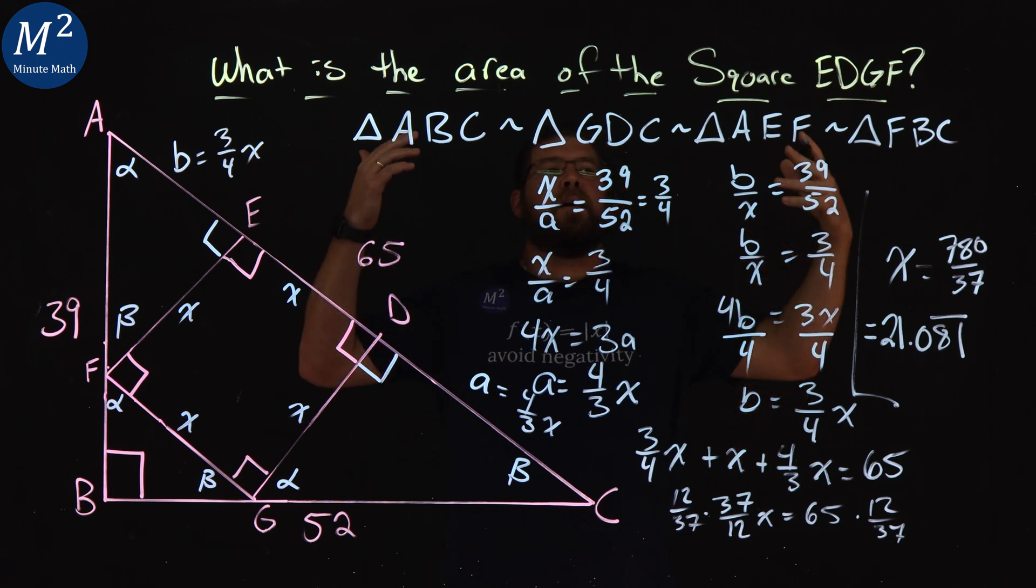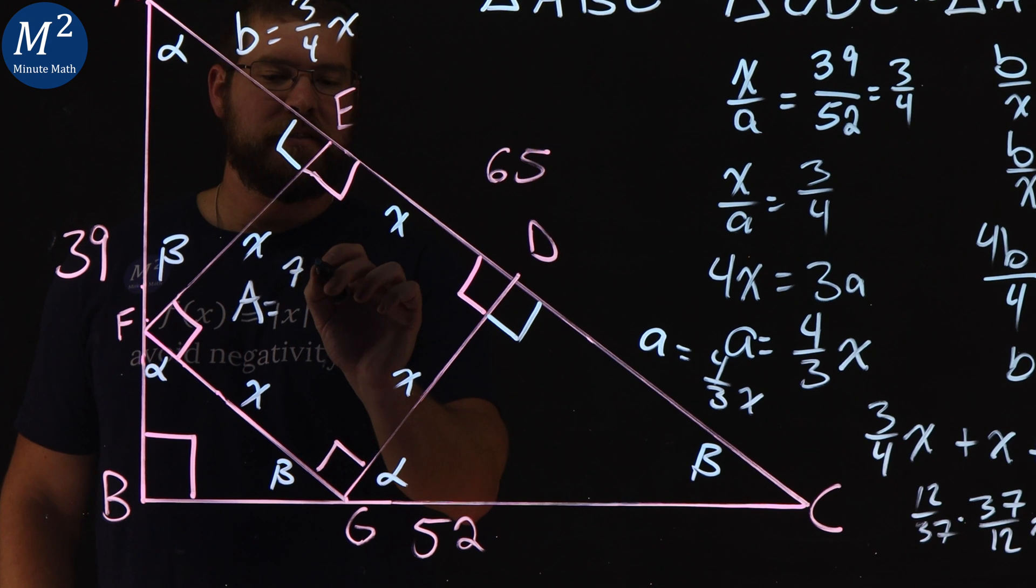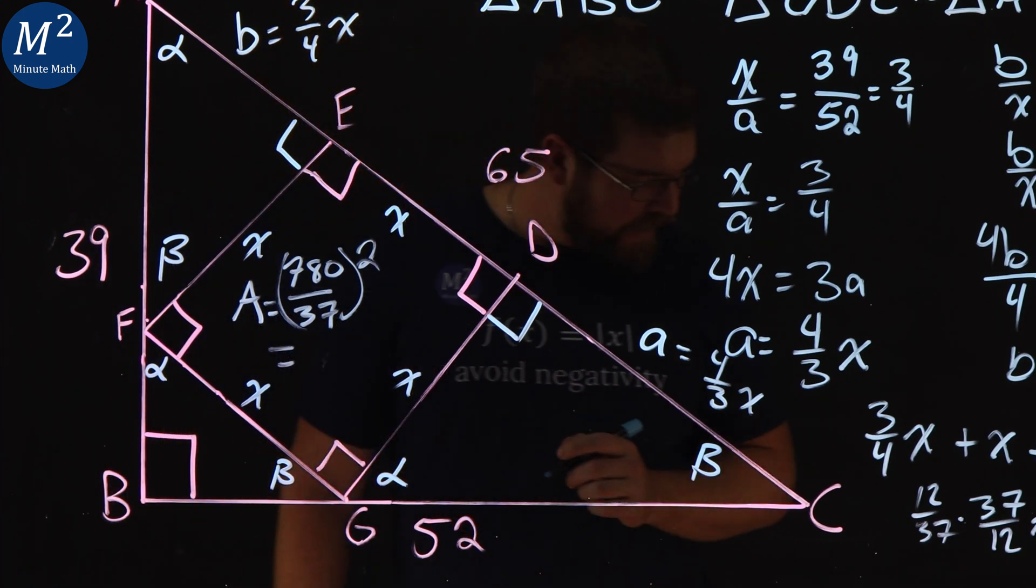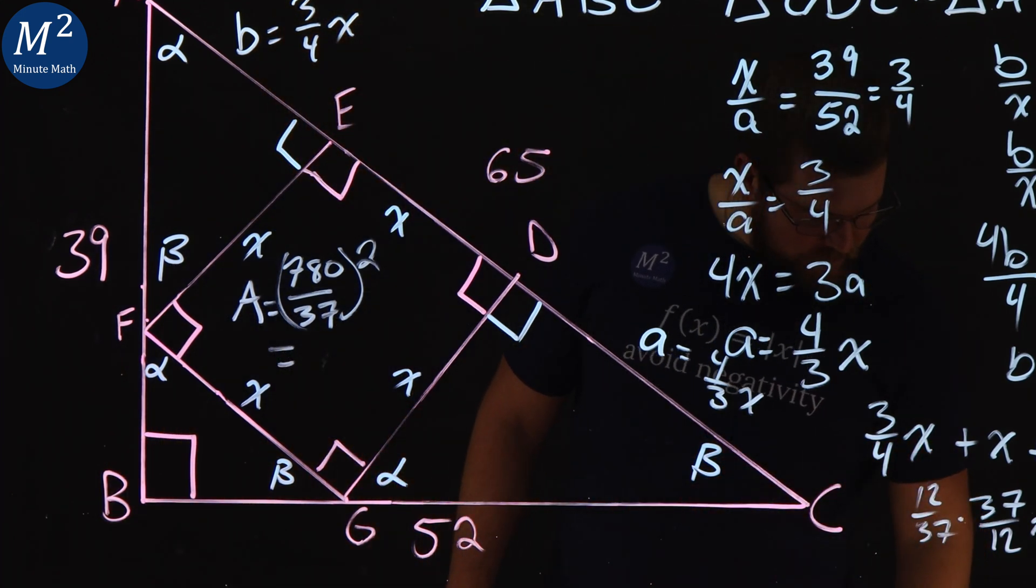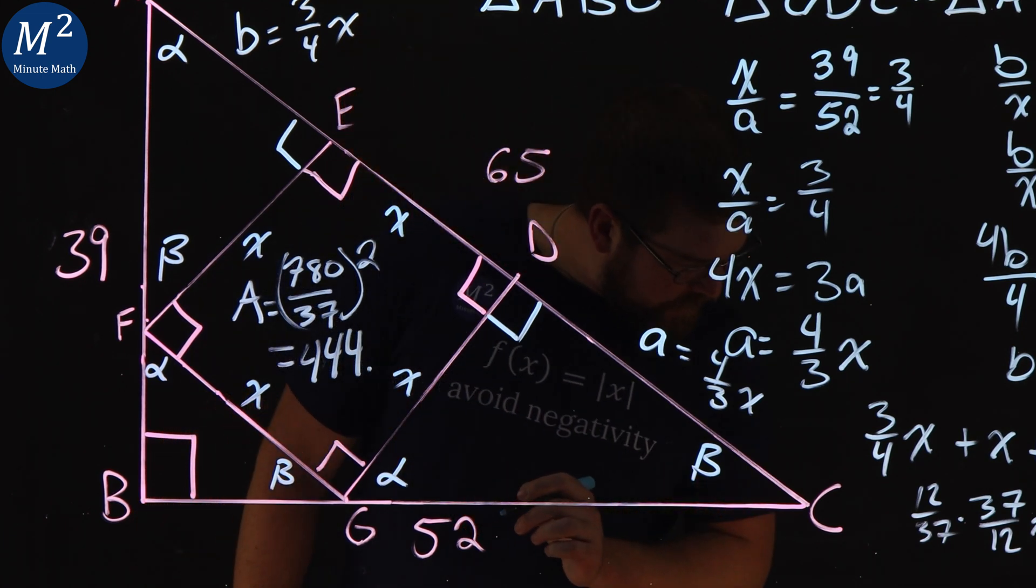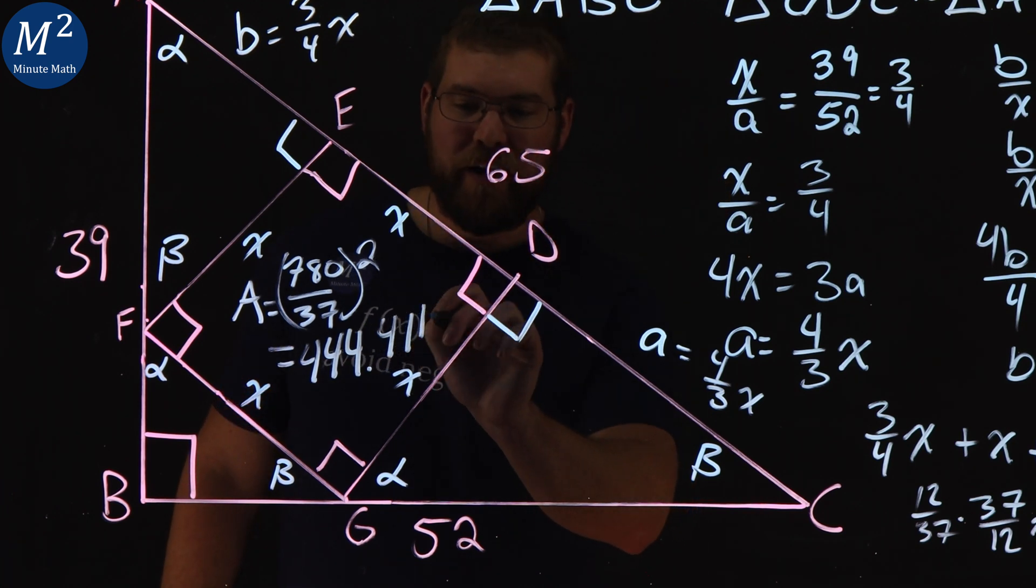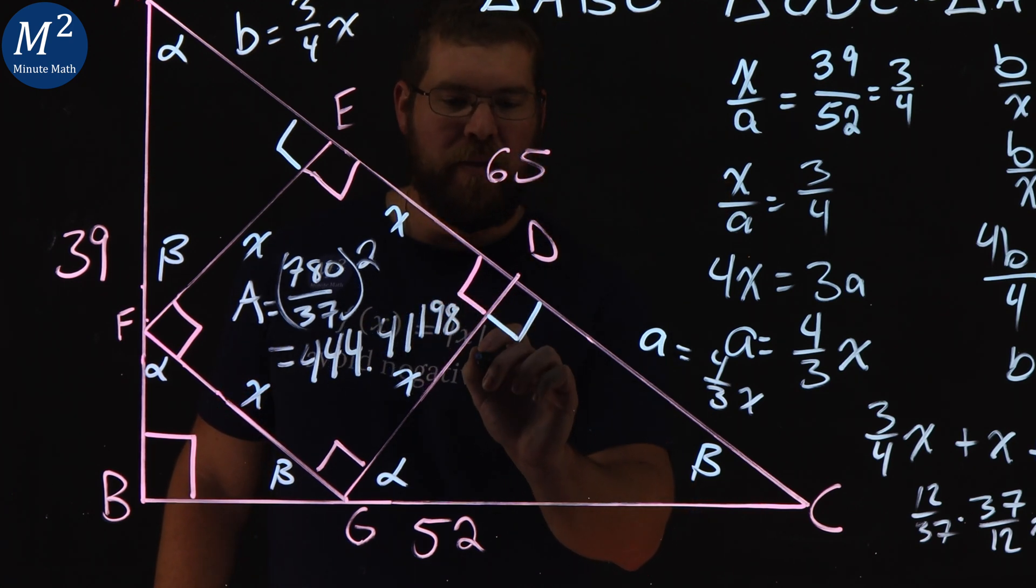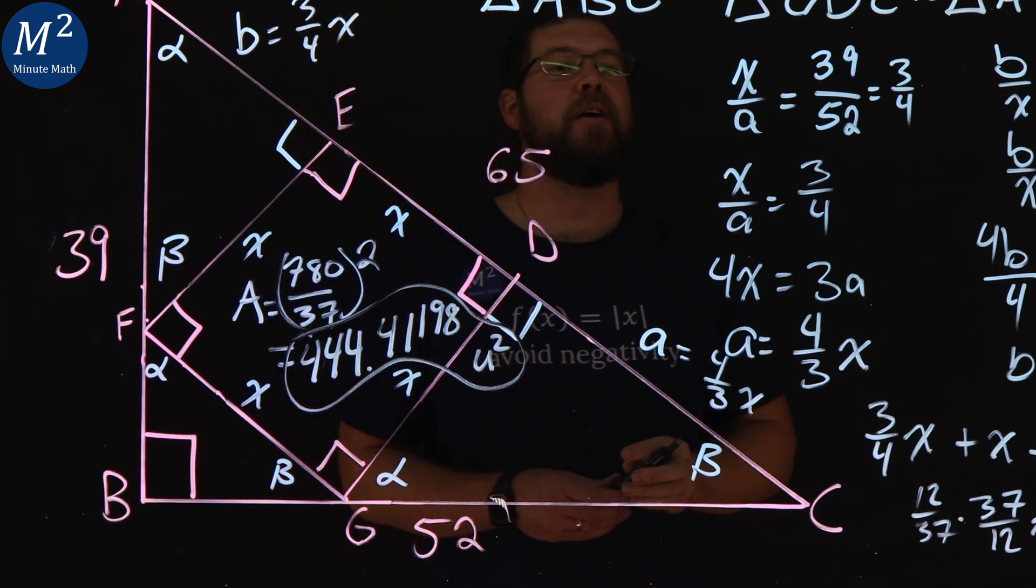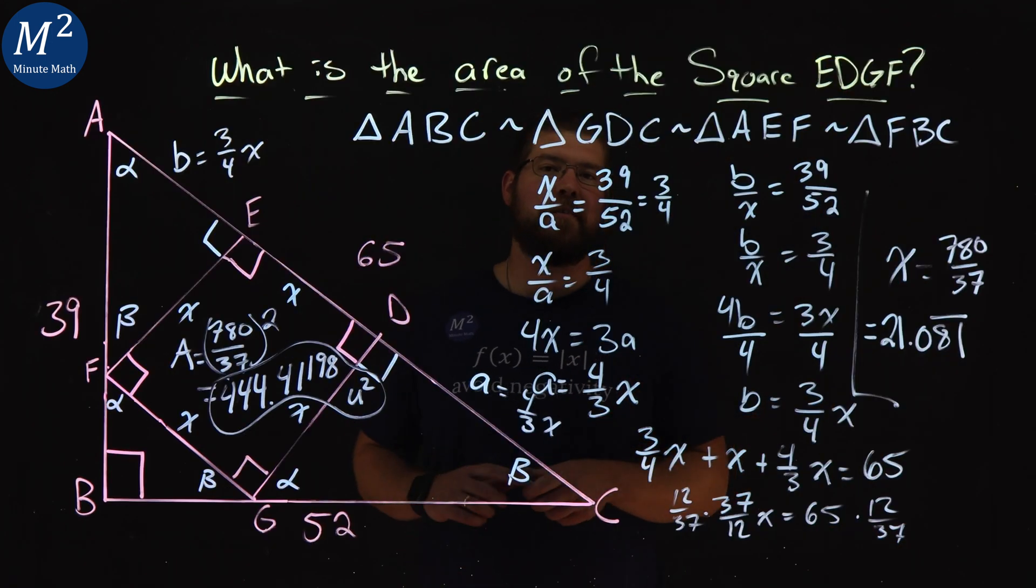Okay, so we have the value of X is 21.081 repeating, but we want to find the area of the square. That's what we're looking here for. So let's go back to our fraction 780 over 37. Let's square that bad boy. And we get a good old, I'll try the decimal value here, 444.4198. And that's a unit squared. You're going to see that right there. So the area of our inner square is 444.4198 units squared.